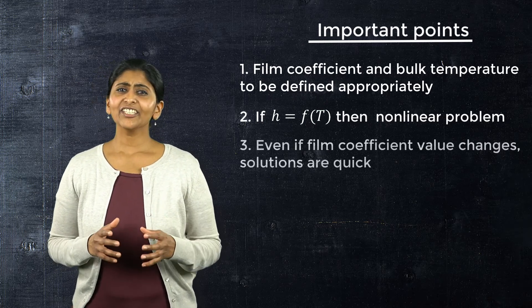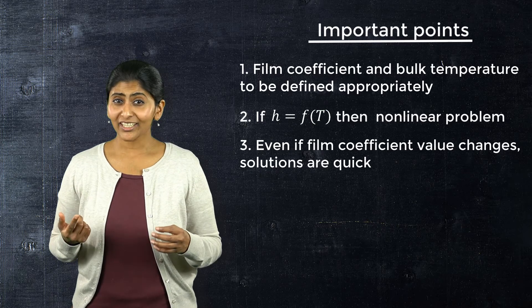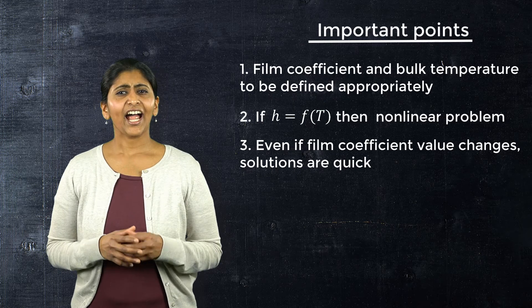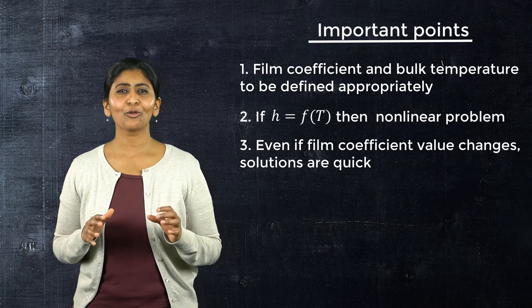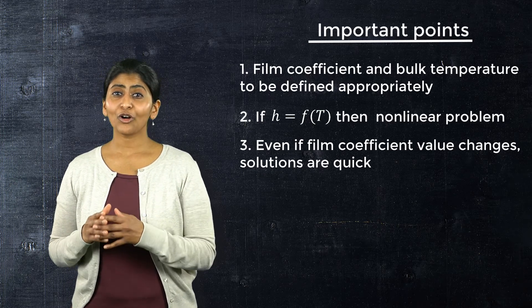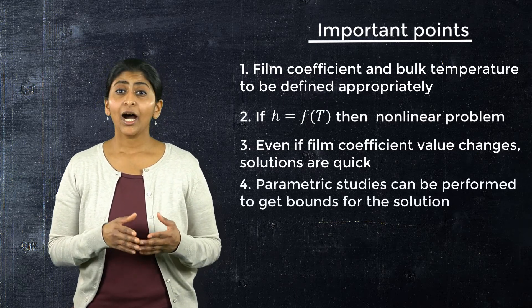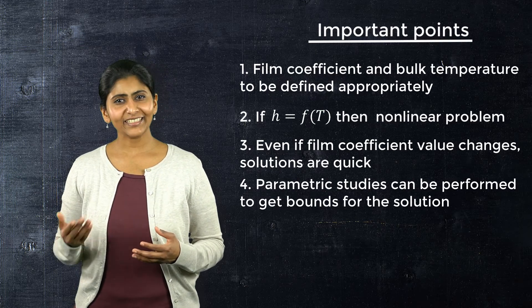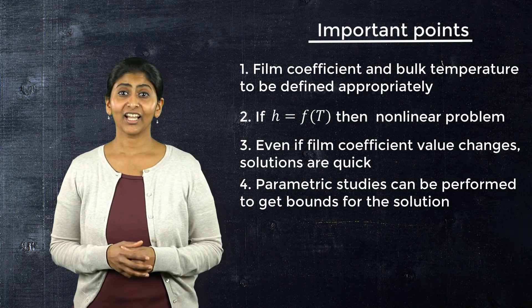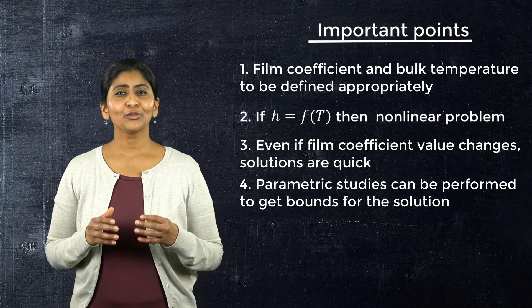Third, even if the value of film coefficient changes, solutions are relatively quick compared to computational fluid dynamic solutions. And lastly, it may be okay if we don't have the exact value of the film coefficient. Since we simplify a conjugate heat transfer problem when using a conduction-based solver, parametric studies can be performed easily and quickly to provide the upper and lower bounds for our solution. Hence, film coefficient and bulk temperature can be used with some conservatism.